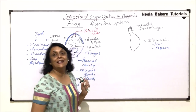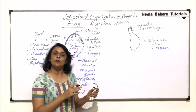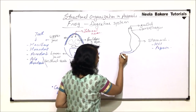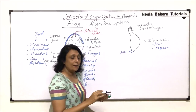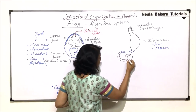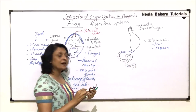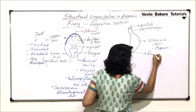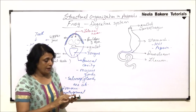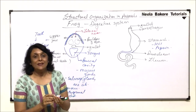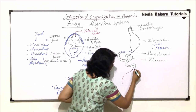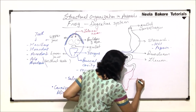After the stomach comes the intestine. The intestine has two parts: small intestine and large intestine. The small intestine has two parts — duodenum and ileum. The duodenum is not coiled, while the ileum is a tubular coiled structure. The large intestine is represented by the rectum only.